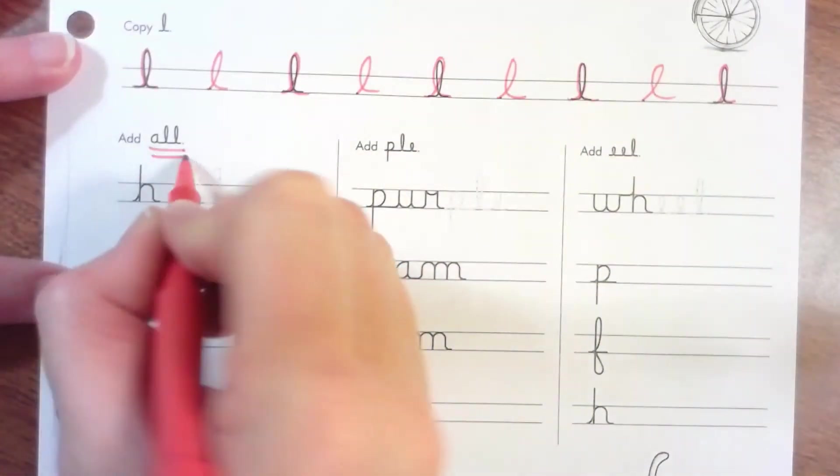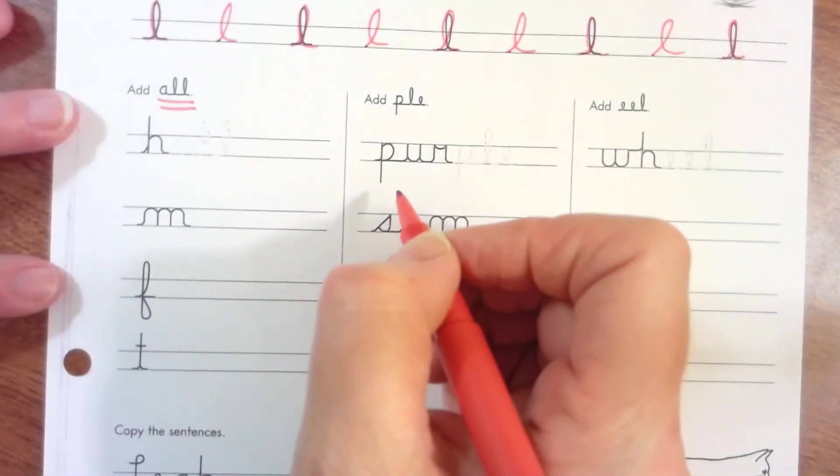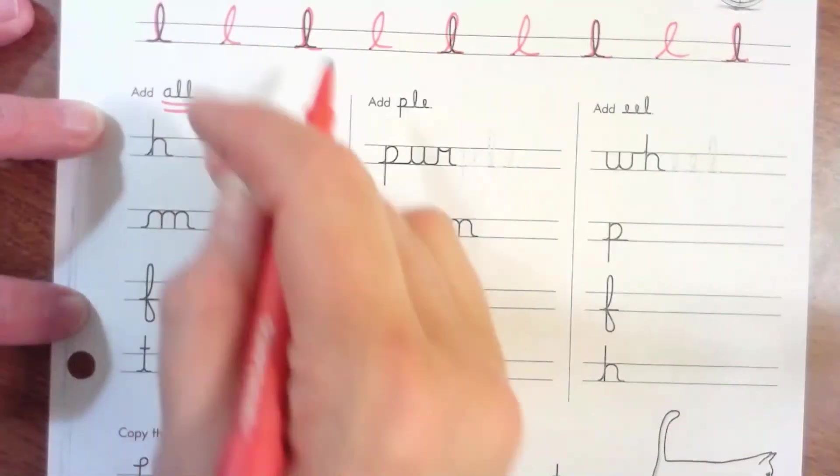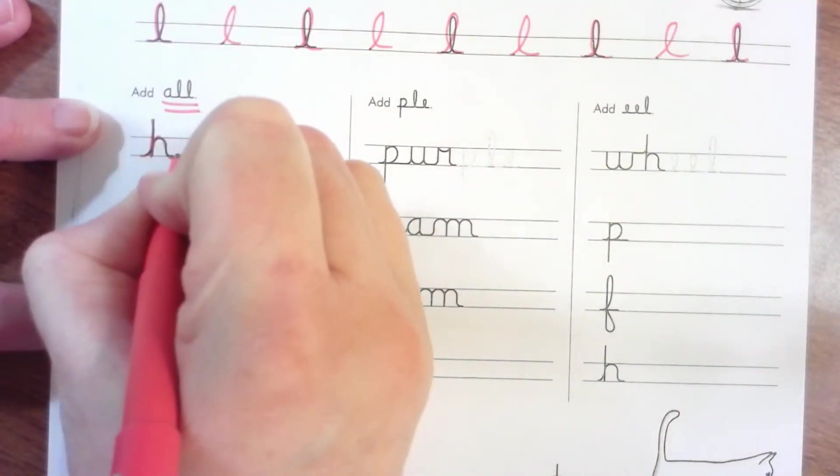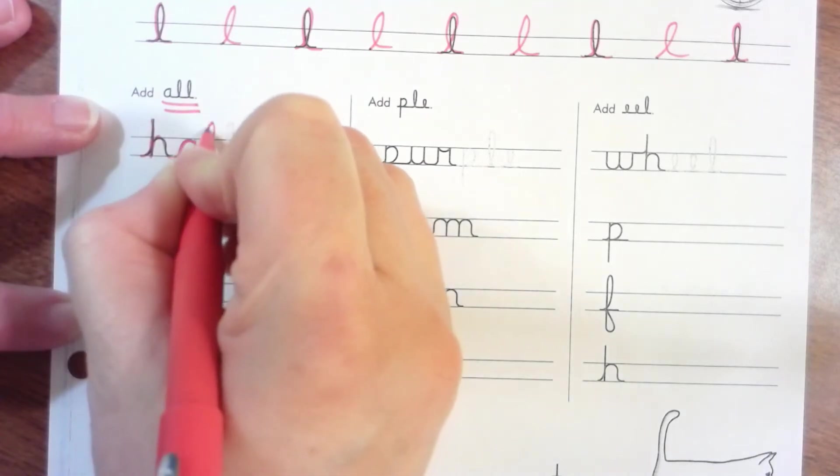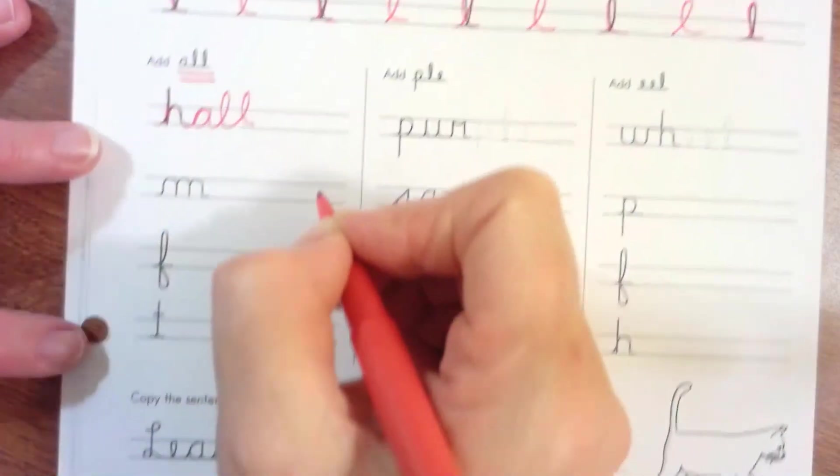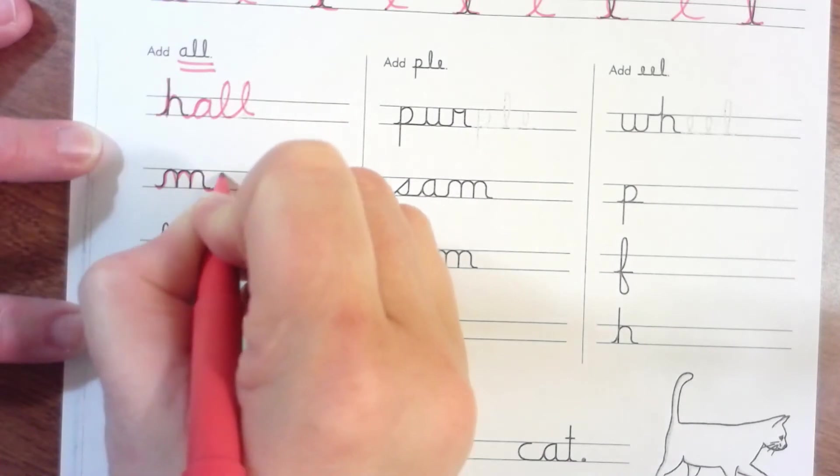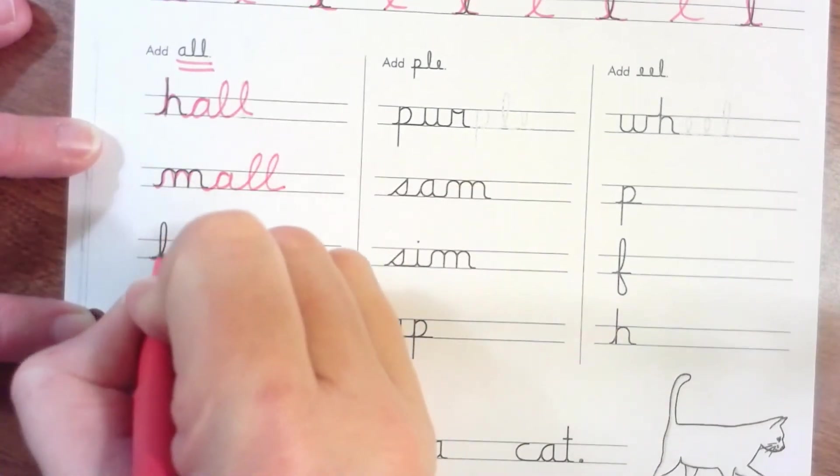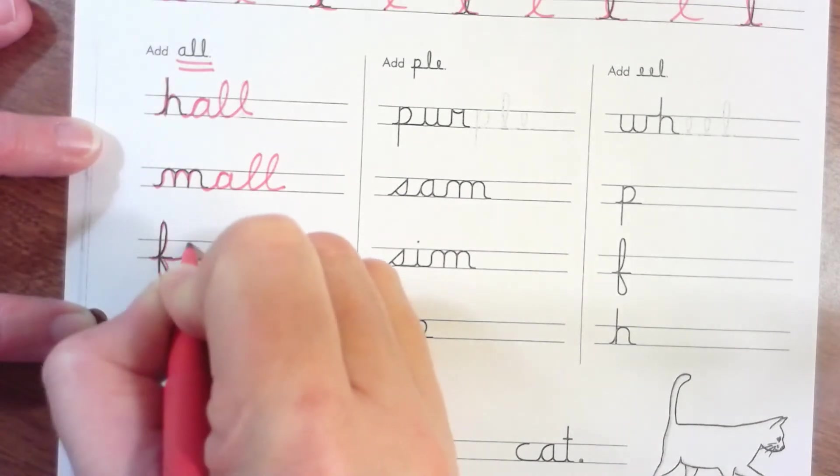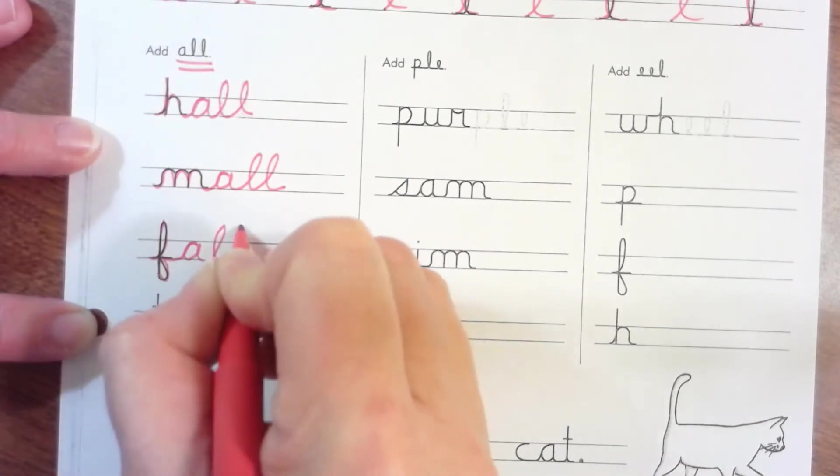Nice, now they want us to add the word 'all' to the rest of this. For this column, so this is travel up, back down.